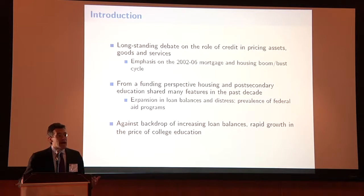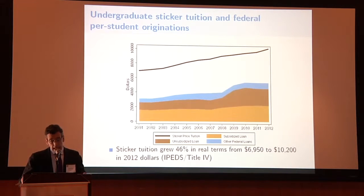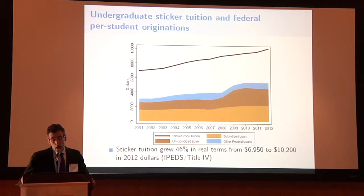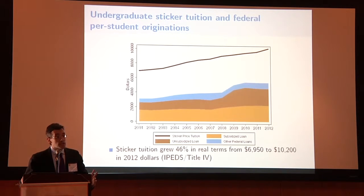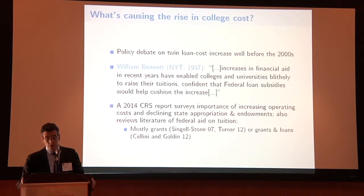Against this backdrop of increasing loan balances, we've experienced a very large increase in tuition. Here I'm plotting sticker price as the black line against federal debt to undergraduates. There has been this upward trend, and sticker price has increased about 46% from 2001 to 2012, from about $7,000 to $10,000. A key policy and research question over the past few years has been: what's causing the rise in college costs?